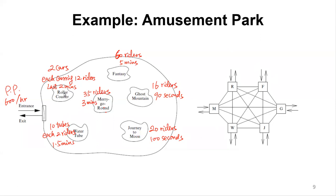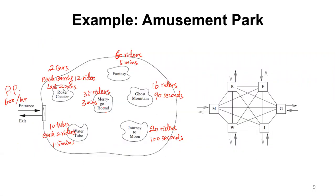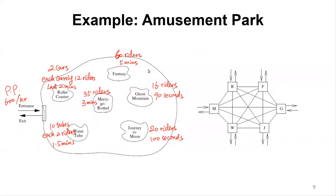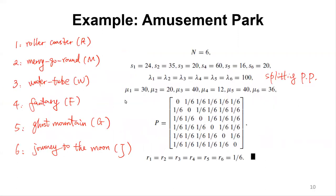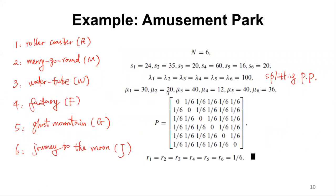At each station, for example roller coaster has two cars, each carrying 12 riders, lasting two minutes. So that's 24 servers, with a service rate of 30 per hour. Merry-go-round has 35 riders and takes three minutes, giving a service rate of 20 per hour.